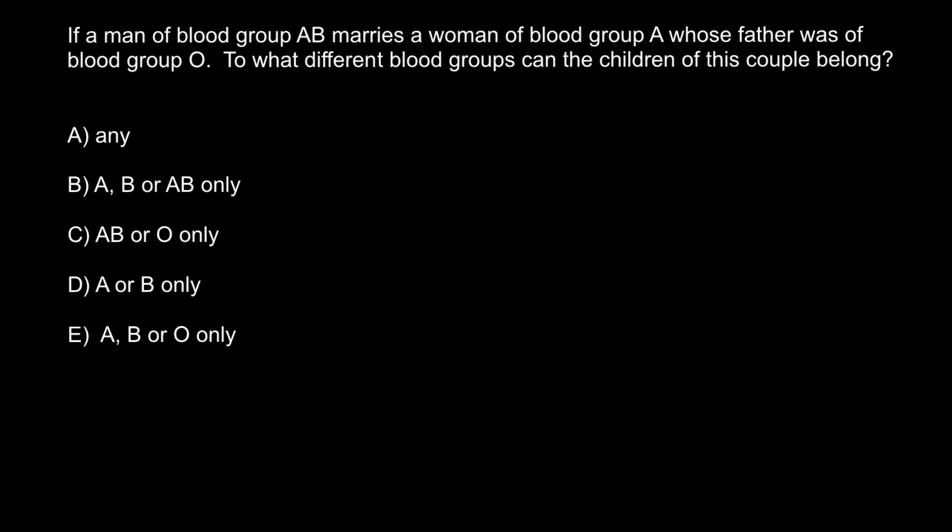Let me first remind you of the four phenotypic blood groups. The first one would be blood group A, the second one would be blood group B, then AB and blood group O. Phenotypic blood group A can be made by two genotypes: the first one would be AA and the second one would be AO.